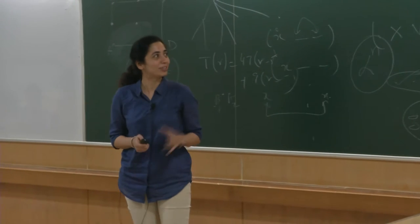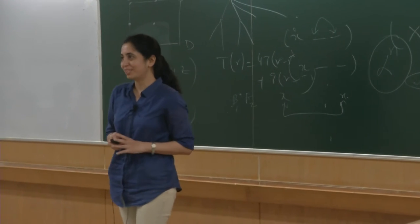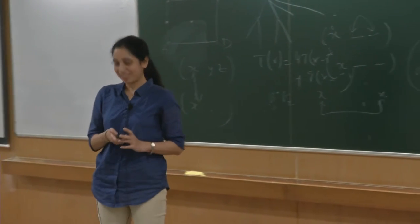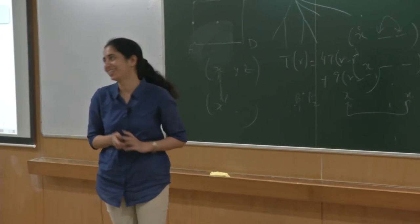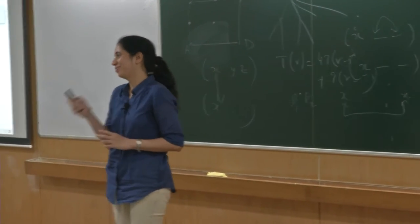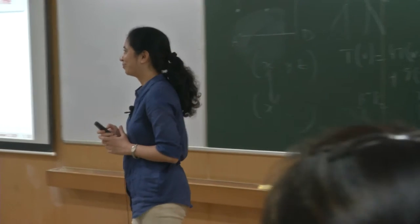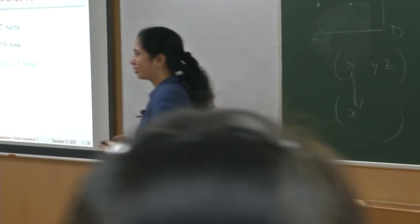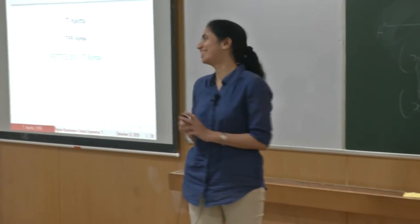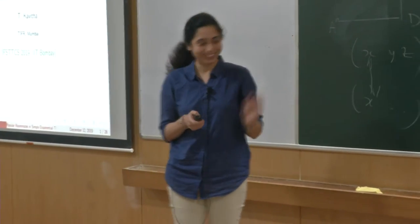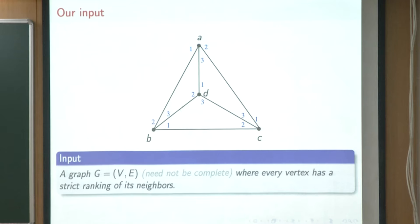This paper is on the popular roommates problem, which is a popular matchings problem in general graphs. For those who attended the workshop, I talked about popular matchings in bipartite graphs, so this is a much harder problem. Let me start from the definitions.